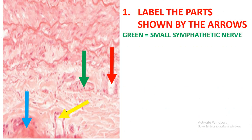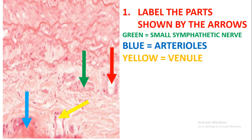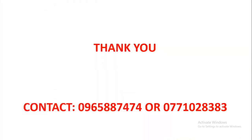Label the parts shown by the arrows on the next slide. Green is showing the small sympathetic nerve — as you can see, the part pointed by green has no lumen. Blue is showing the arteriole, and yellow is showing the venule.